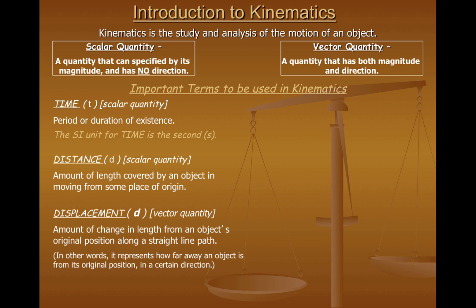A quantity very similar to distance is called displacement. And displacement is a vector quantity. Displacement is the amount of change in length from an object's original position along a straight line path. Another way of describing displacement and how it differs from distance besides being a vector quantity is that displacement represents how far an object is from its point of origin and in what direction it finished relative to where it started.